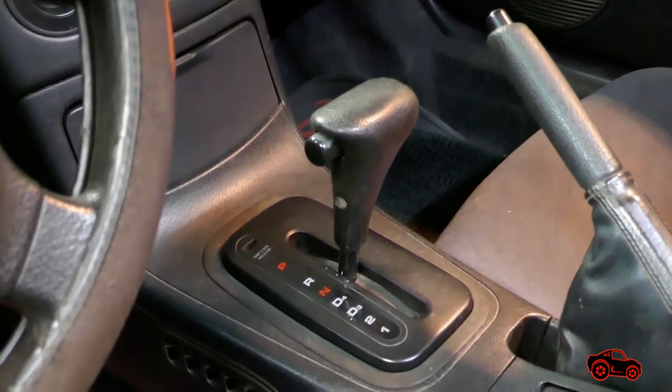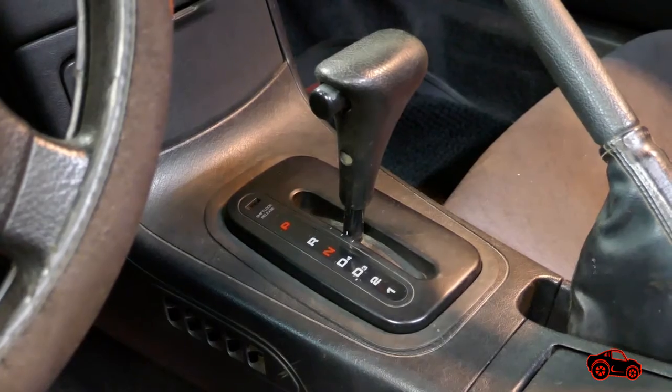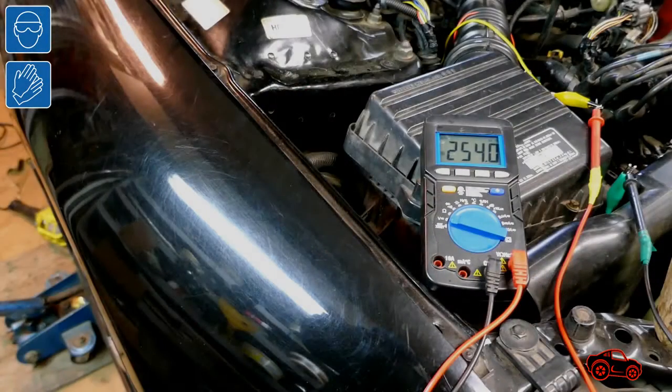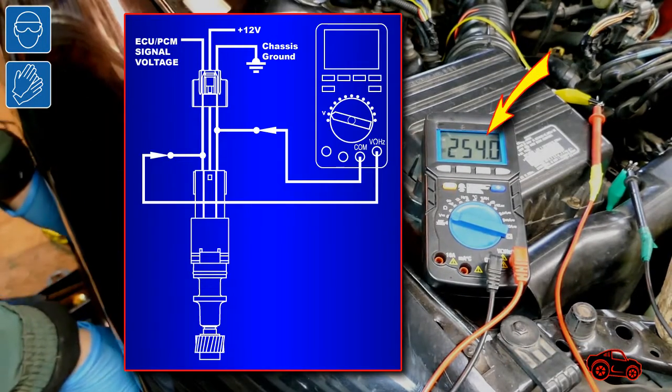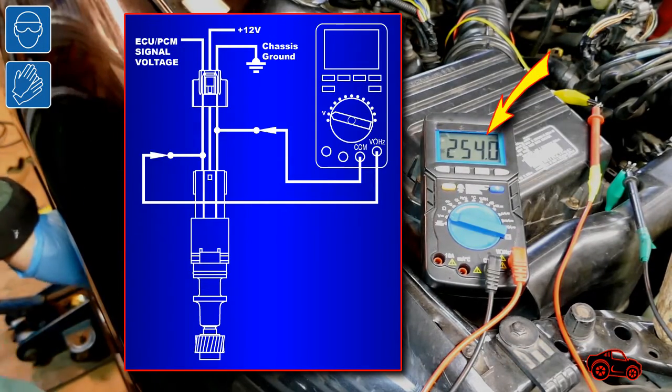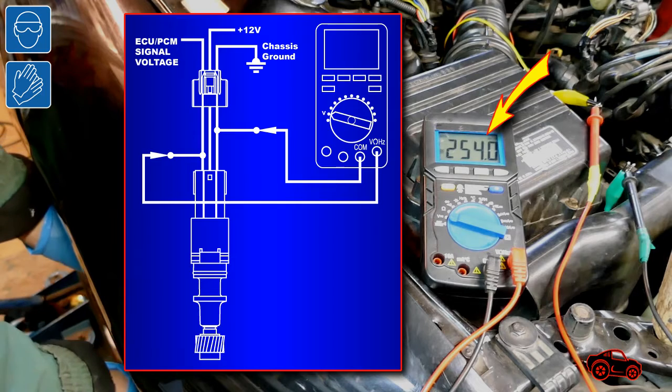At first, when the wheel was not spinning, the multimeter indicated 254 millivolts. In this case, I considered this value as being close enough to 0 volt.